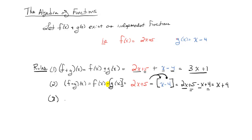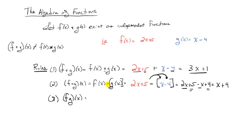The next property is multiplication. We write this as fg of x. Be very careful — when you see no operation in the middle, we assume multiplication. Later we'll learn about composition, which looks like f-circle-g of x, and that is not equal to f of x times g of x, so be careful not to confuse those two. Multiplication means f of x times g of x.